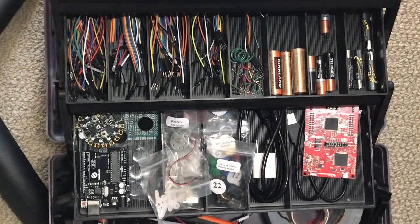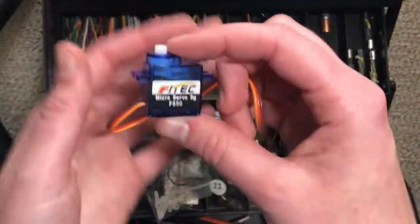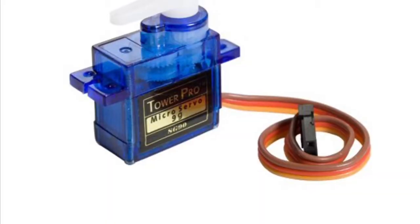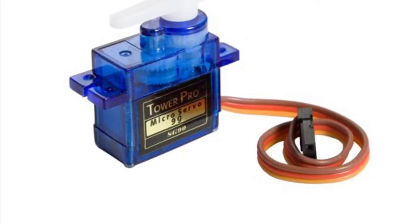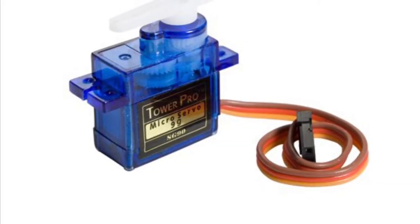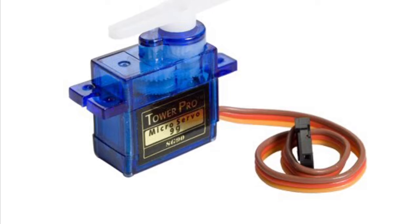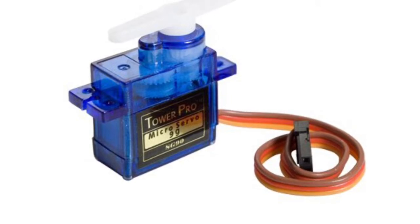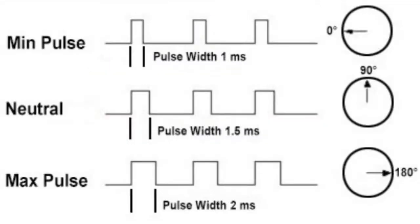I also have a servo, or position motor. Servo motors are energy efficient and are often used in remote controlled cars, robots, and airplanes. Servos allow for more mechanical precision. The position of a servo motor is controlled by electrical pulses — the greater the width of the pulse, the greater the angle of rotation.